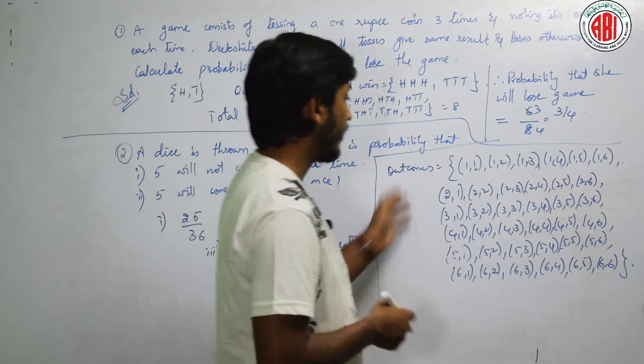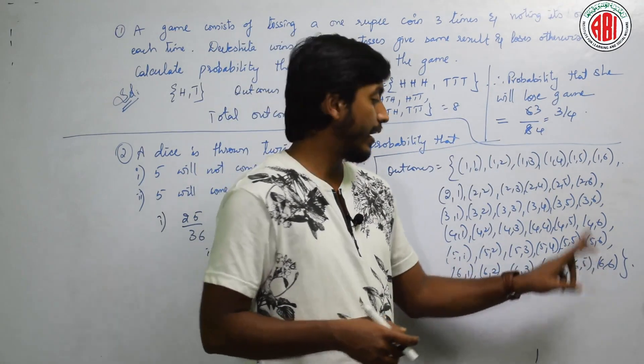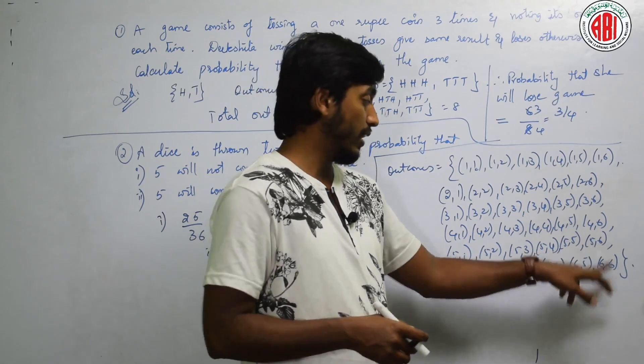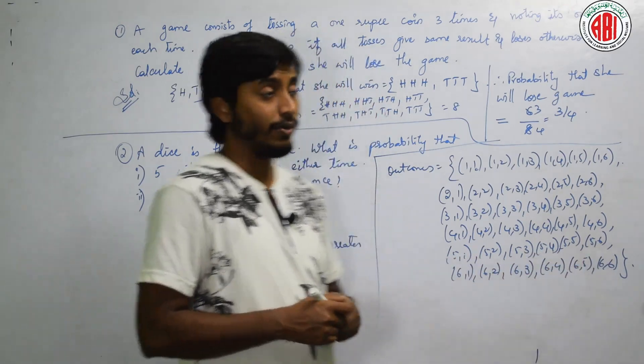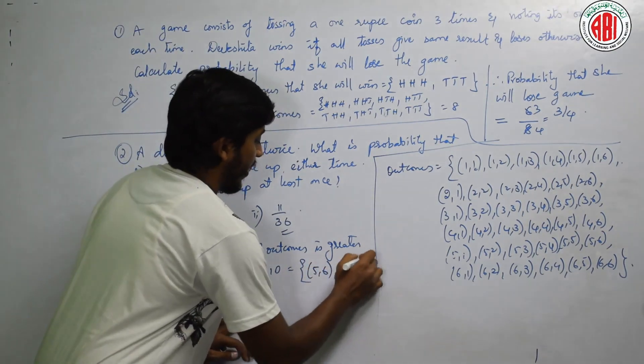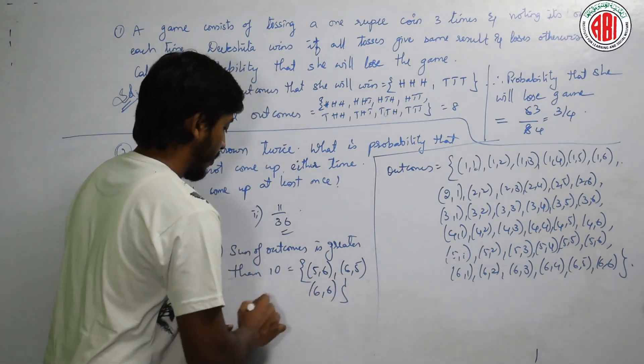10 se yadha means 11. 11 kab miltha? See here, kya miltha? 5,6, 6,5 also. And 6,6 is 12. We get only these 3 cases. Other than these 3, we do not get any time. That is 5,6, 6,5 or 6,6.